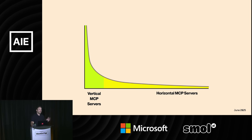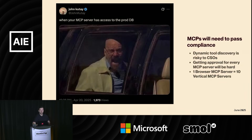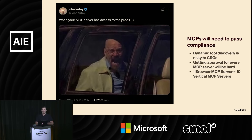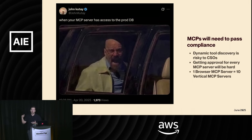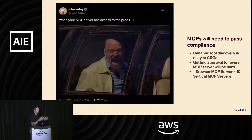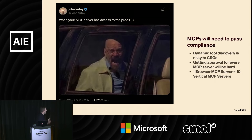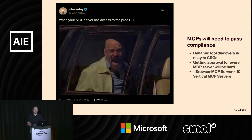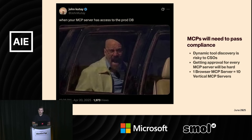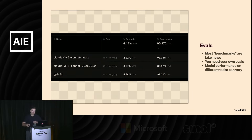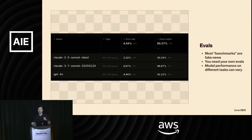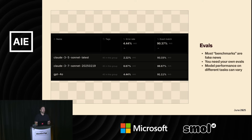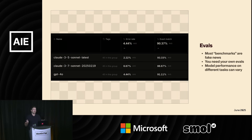A few notes on MCP concerns. MCPs are going to have to pass compliance. Dynamic tool discovery — this idea that you can plug your agent into an infinite toolbox of MCP servers — is going to be hard for CISOs to get on board with. You'll want to select which MCP servers make the most sense. With a horizontal MCP server — browser, email, or anything — you only have to onboard one MCP server as opposed to one for each individual integration. Also: most benchmarks are fake news, especially when the company putting out the benchmark is also ranking themselves. You really need your own evals.